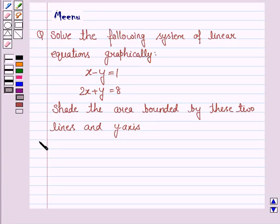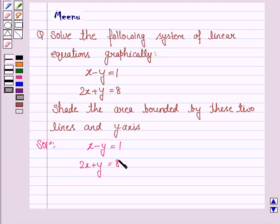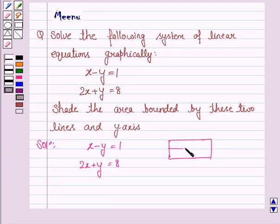Let's now proceed with the solution. The given equations are x minus y is equal to 1 and 2x plus y is equal to 8. To draw the graph of these equations, we need to make a table which gives us the values of x and y through which each graph passes. We first make a table for the equation x minus y is equal to 1.